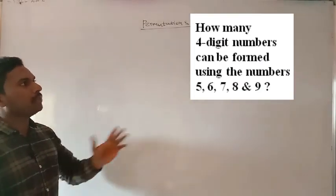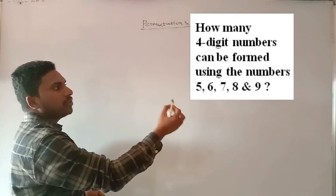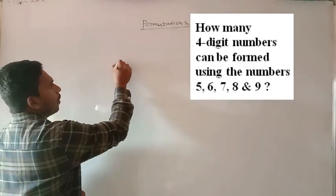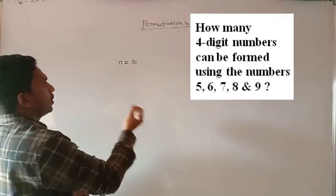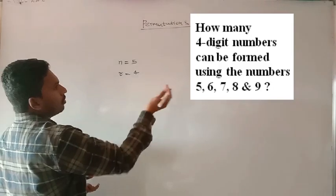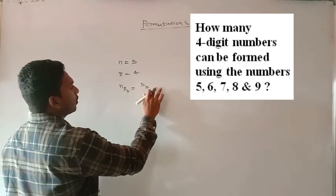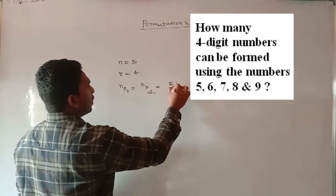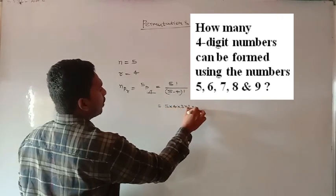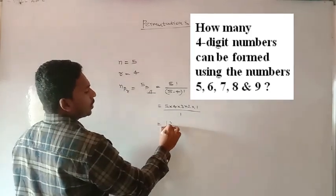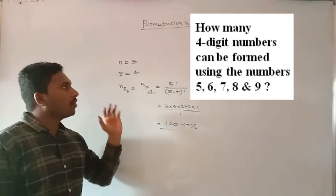Question 2: How many ways can a 4-digit number be formed using 5, 6, 7, 8, and 9? Total numbers given is 5, so N = 5. We need to choose 4 to form a 4-digit number, so R = 4. Using NPR: 5P4 = 5! / (5−4)! = 5×4×3×2×1 / 1 = 120 ways.